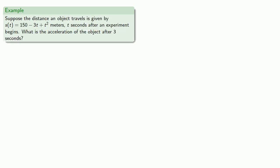For example, suppose the distance an object travels is given by some function s(t) in meters, t seconds after an experiment begins. What's the acceleration of the object after 3 seconds? We could find s(3) which will give us an answer in meters, but this doesn't answer the question—acceleration is not measured in meters.